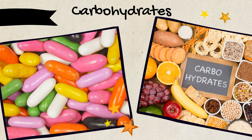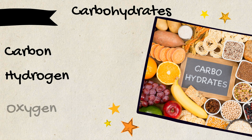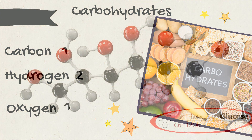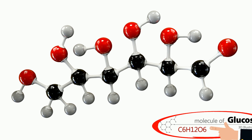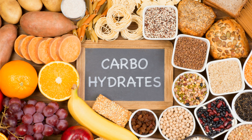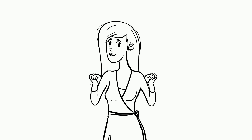Up first, carbohydrates. They are composed of three elements — carbon, hydrogen, and oxygen — in a 1 to 2 to 1 ratio. For example, take a look at glucose. Carbohydrates store energy and provide structural support. Examples of carbohydrates include sugars and starches. And yes, they are nice to eat. Carbohydrates provide quick energy for humans.